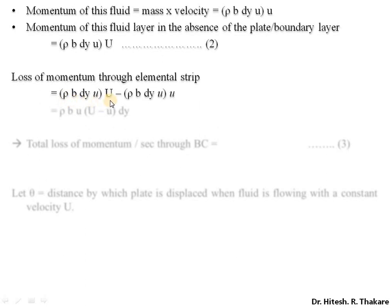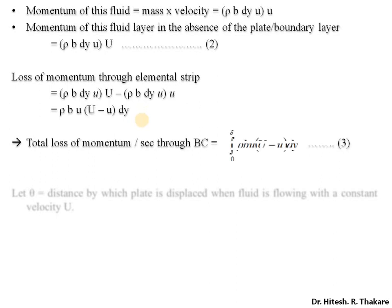The loss in momentum is calculated as the momentum when velocity is the free stream velocity minus the momentum when the velocity equals the local velocity. So the loss in momentum through the strip is rho·b·u·(U − u)·dy. This is a differential quantity, so we integrate within the limits zero to delta to obtain total loss of momentum.